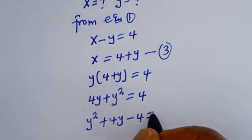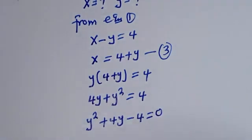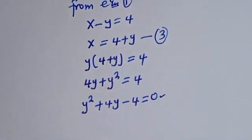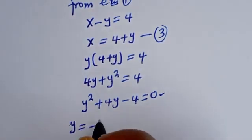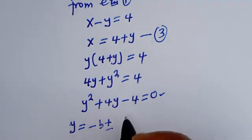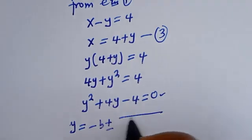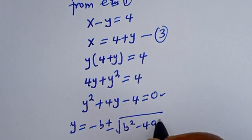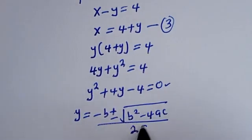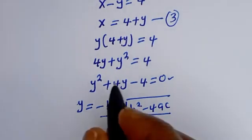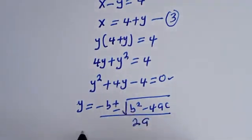This gives us y squared plus 4y minus 4 is equal to zero. This is a quadratic equation, which we can solve using the quadratic formula: y is equal to minus b plus or minus square root of b squared minus 4ac, all over 2a.